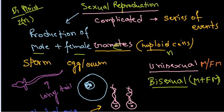Sexual reproduction requires certain organs dedicated for the production of gametes. In both cases there are certain organs present: for males there is the testis, and for females there is the ovary which produces eggs. In the case of plant species, the male part of the plant is generally termed stamen and the female part is carpel.